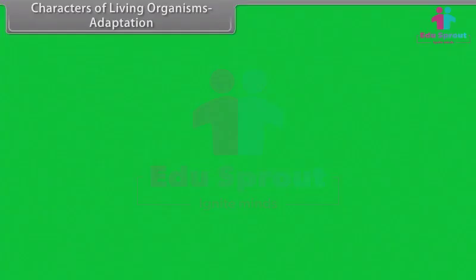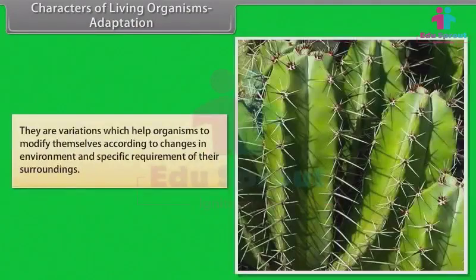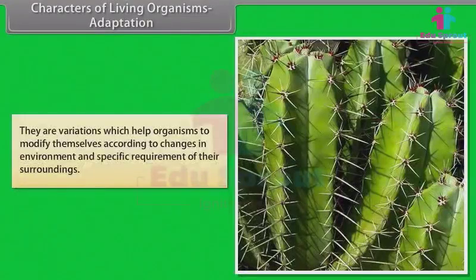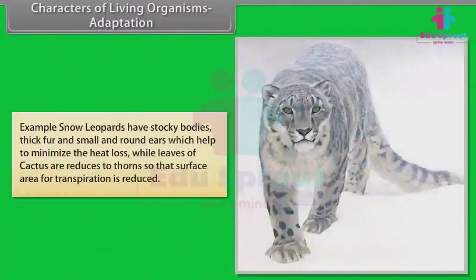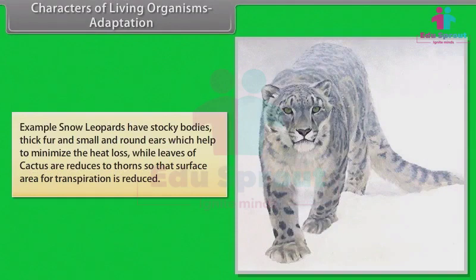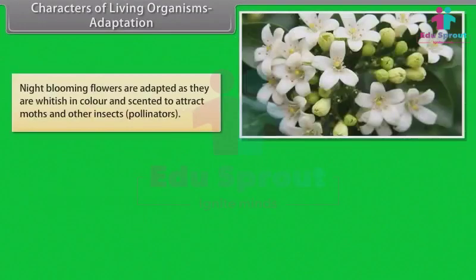Adaptation: They are variations which help organisms to modify themselves according to changes in environment and specific requirements of their surroundings. For example, snow leopards have stocky bodies, thick fur, and small and round ears which help to minimize the heat loss, while leaves of cactus are reduced to thorns so that surface area of transpiration is reduced.